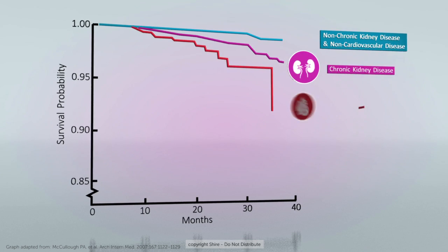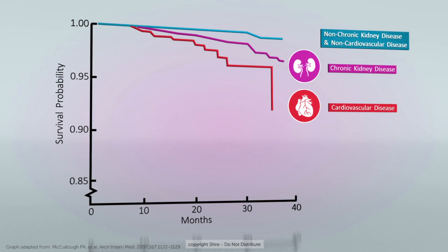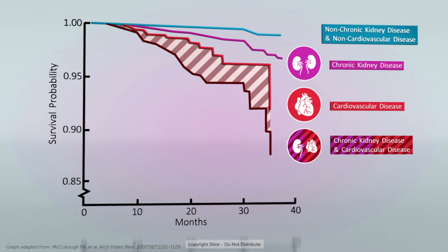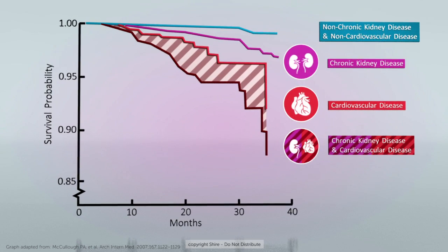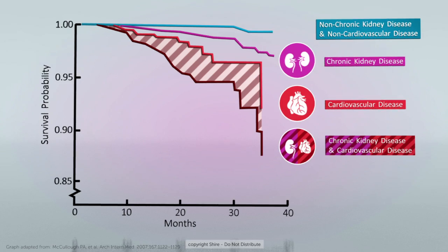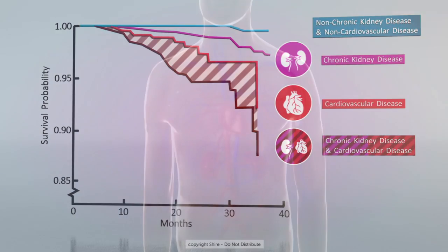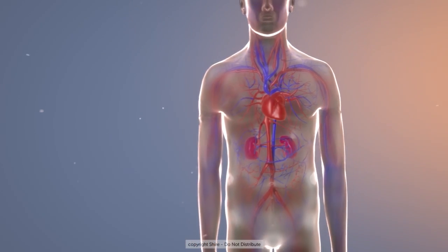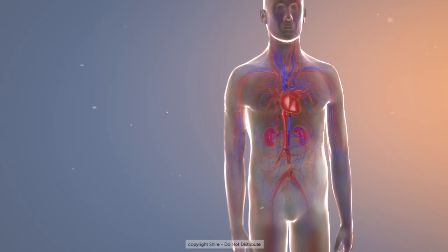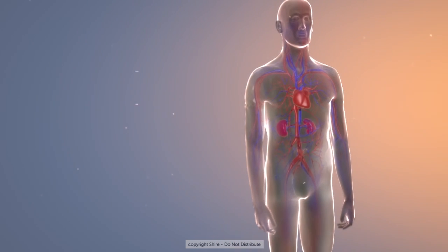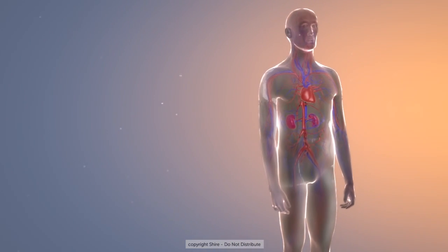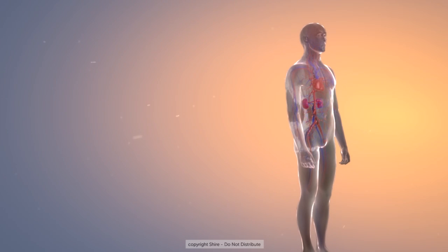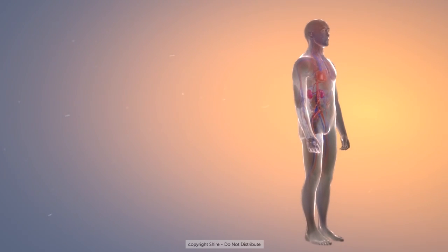Once reduced GFR is detected, Fabry patients are likely to already have significant cardiovascular abnormalities. Understanding these complex and interlinked disease manifestations is central to improving outcomes for patients with Fabry disease.